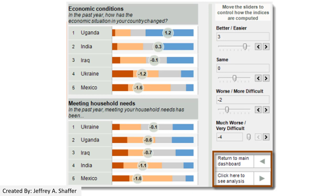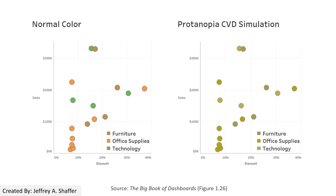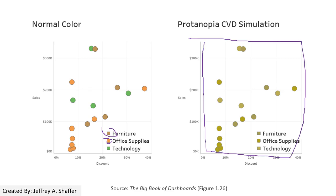Another example uses orange, gray, and blue together, which provides excellent contrast between colors even for people with CVD. To be more precise, we should not use red, green, orange, and brown together, because in CVD simulation you can see it is very hard to tell those colors apart.